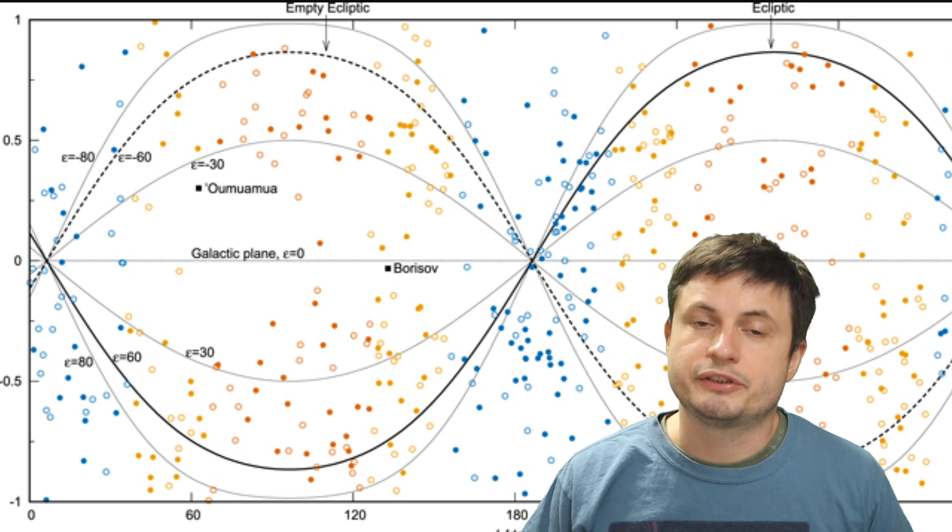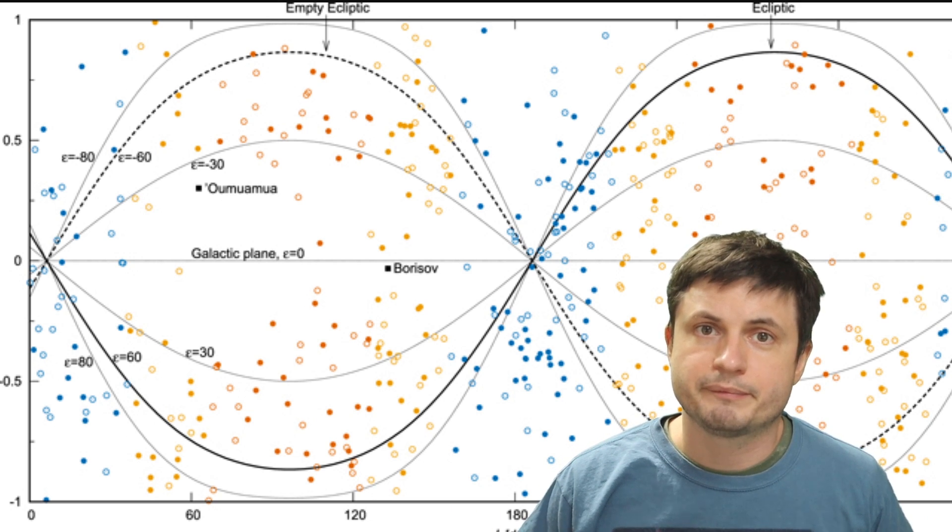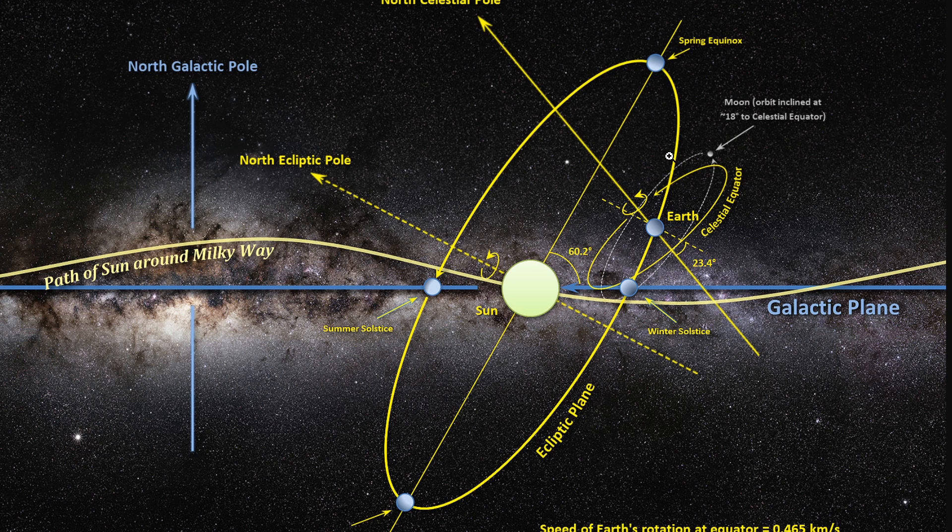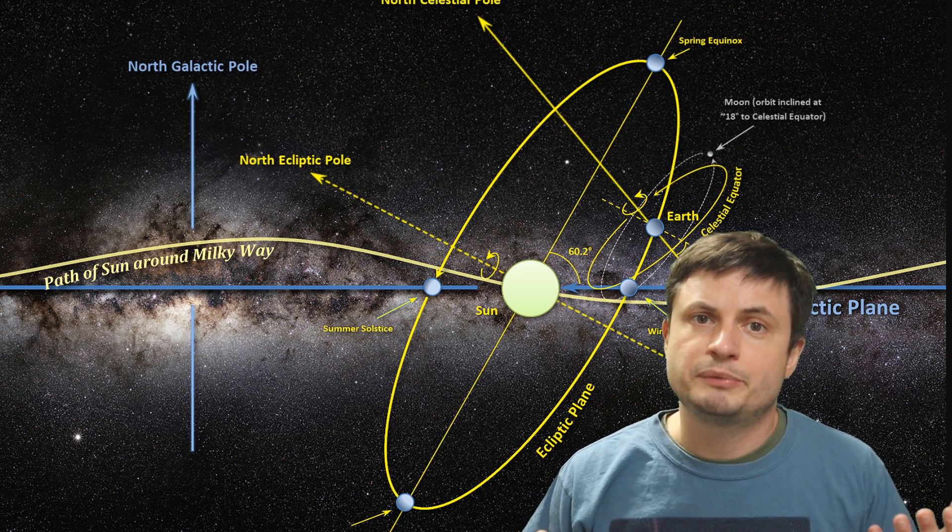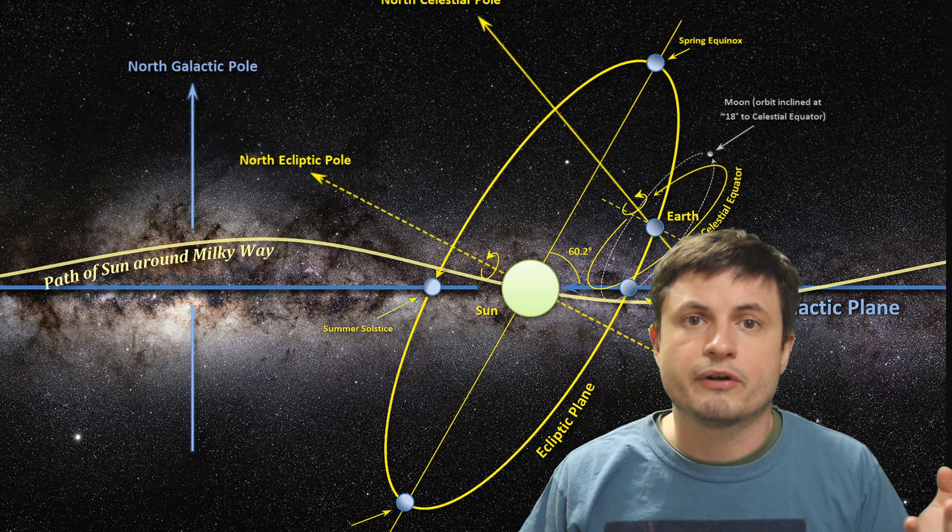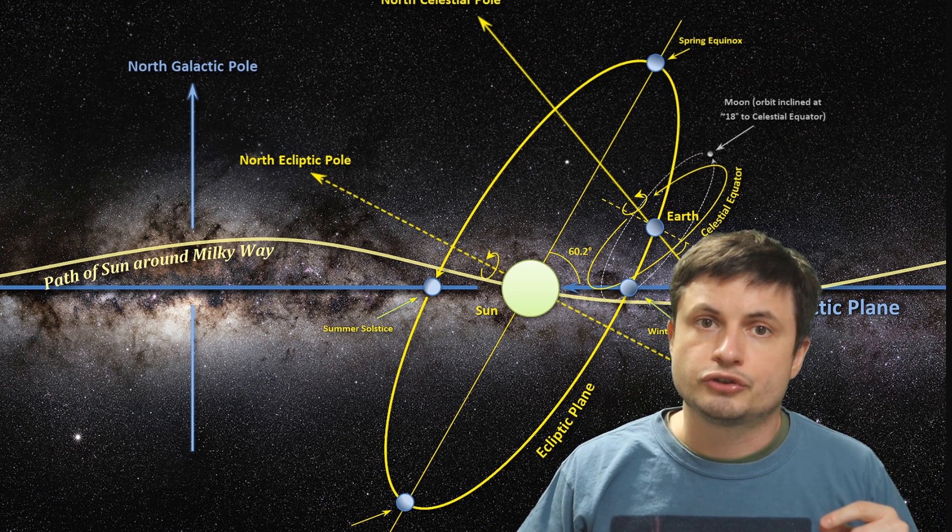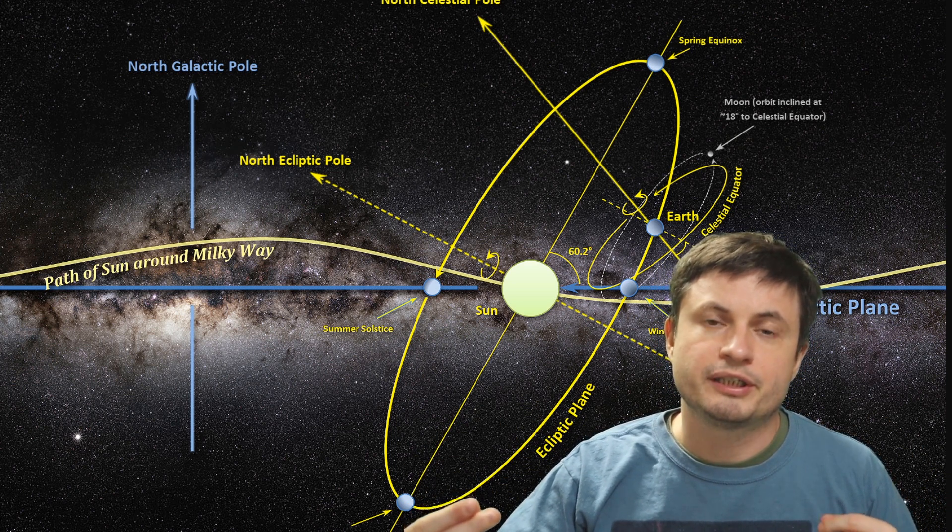But with time, as the solar system orbited around the galaxy, and as the solar system received more gravitational effects, not from just the sun and the planets, but also from the galaxy itself, another new ecliptic started forming in the farthest reaches of the solar system, slowly populating the empty ecliptic with comets.